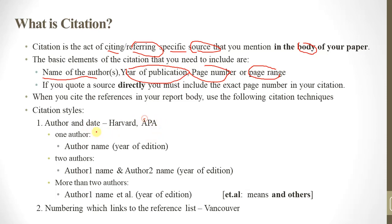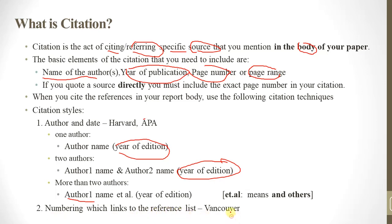In the Harvard style: for one author, use the author's name and year of publication. For two authors, list both authors' names and the year. For three or more authors, use the first author's name followed by 'et al.' and the year, which links to the reference list.